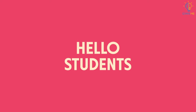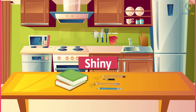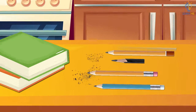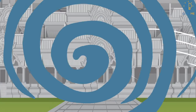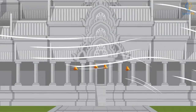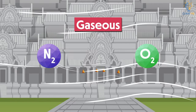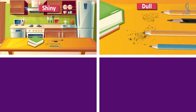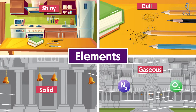Hello students! Have you carefully observed objects around you at your home? Objects like cooking vessels have a shiny appearance while objects like graphite of your pencil have a dull appearance. Also observe a temple bell — it is solid while the air consisting of nitrogen, oxygen, etc. is in gaseous form. Whether shiny or dull, solid or gas, everything around us is made up of elements.